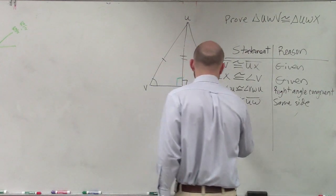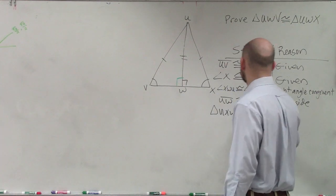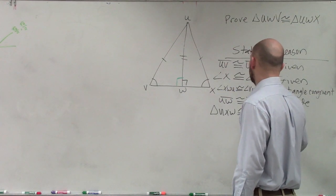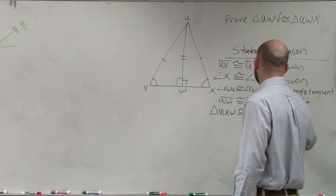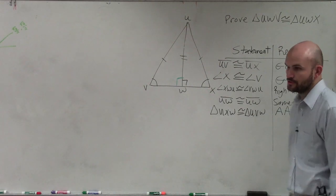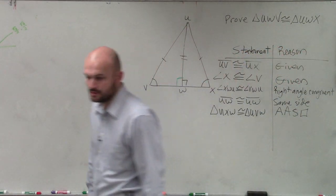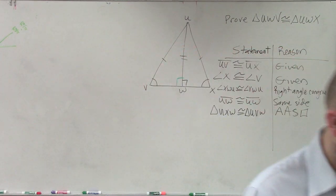So anyways, I can just say triangle UXW to UVW is congruent to triangle UXW to UVW. Why? Angle, angle, side. And that is a congruency statement, right? And that would pretty much be it.